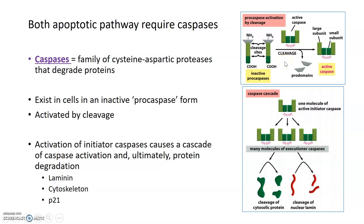Most of the time, caspases exist in the cell waiting for a cell death signal. They're not made in response to the signal, but rather they're activated from an inactive pro-caspase form to an active caspase form. This happens through cleavage of the pro-domains. Two inactive pro-caspases have their pro-domains cleaved, they then dimerize into an active caspase, which can then degrade proteins.